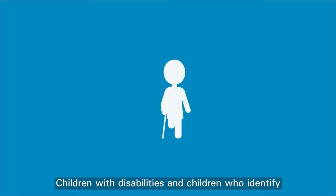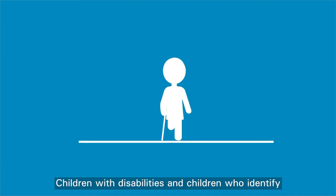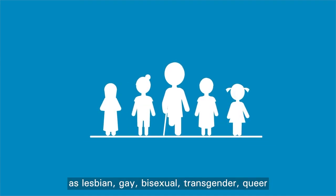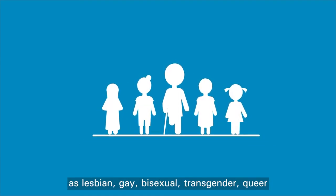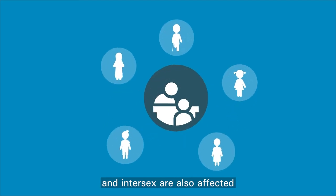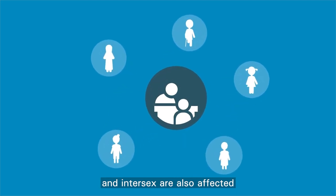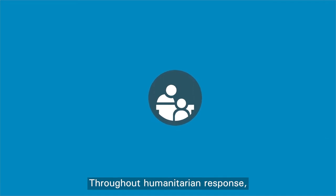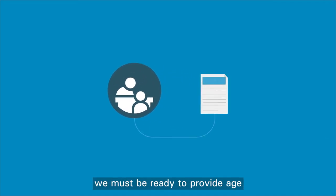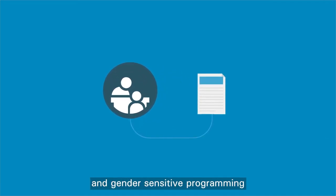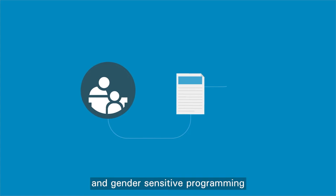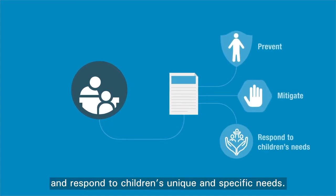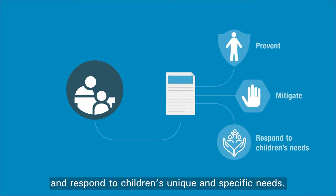Children with disabilities and children who identify as lesbian, gay, bisexual, transgender, queer, and intersex are also affected and may find it difficult to access support. Throughout humanitarian response, we must be ready to provide age- and gender-sensitive programming to prevent, mitigate, and respond to children's unique and specific needs.